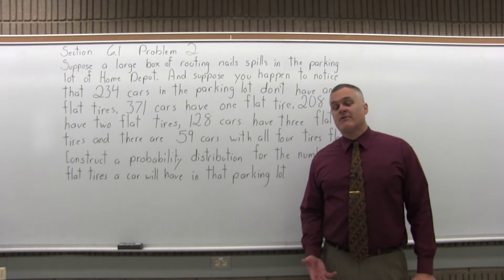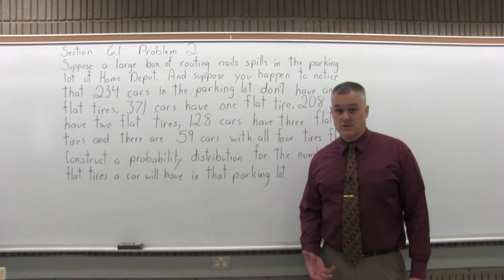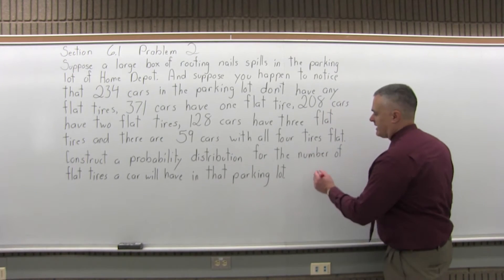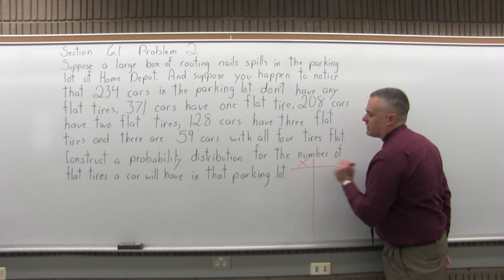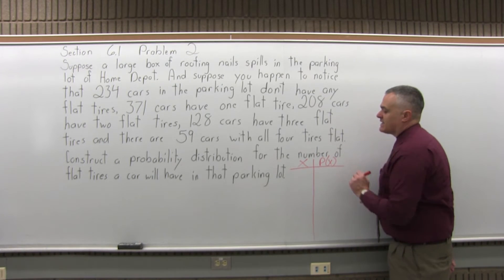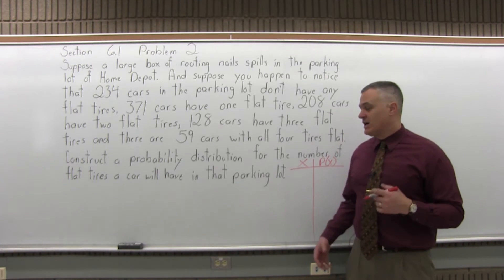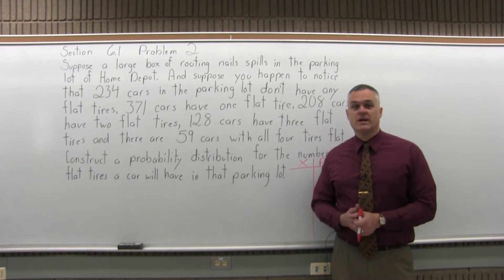When you want to have a probability distribution, what you're going to have is a chart with two columns. The first column we will label as X, and the second column will be P(X) for probability of X. The first column is going to list every possible outcome of your random variable, the random variable in this problem being how many flat tires on a car.